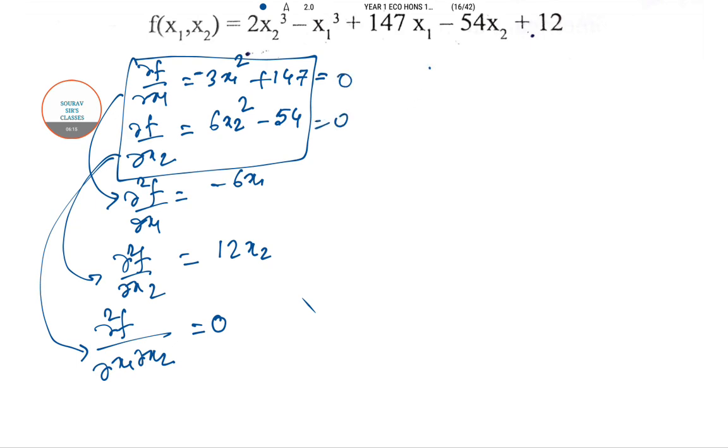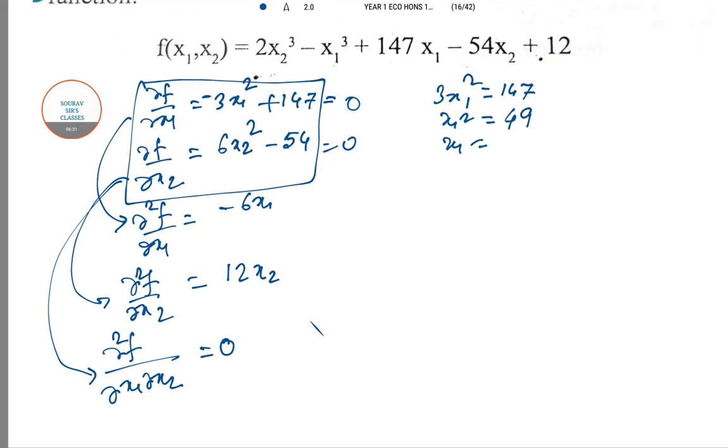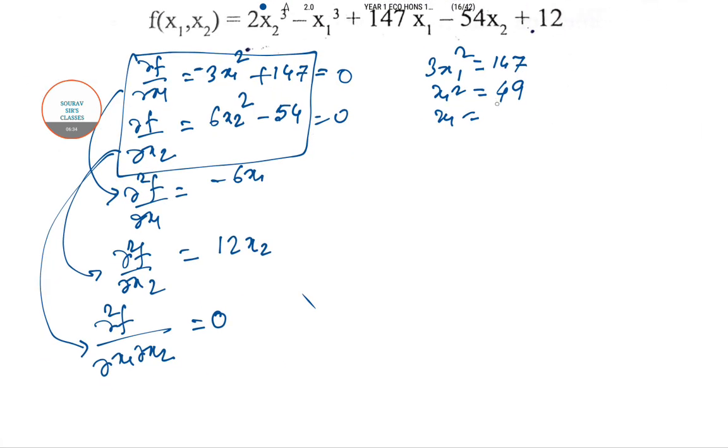So the first order conditions should be equated with 0. So the first one gives you 3x1 squared equal to 147, so x1 squared equal to 49, and x1 equal to plus minus 7, since they have not given any restriction. Similarly, 6x2 squared equal to 54, so x2 squared equal to 9, x2 equal to plus minus 3.